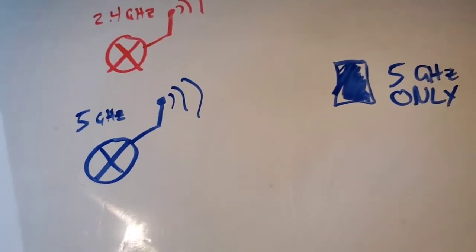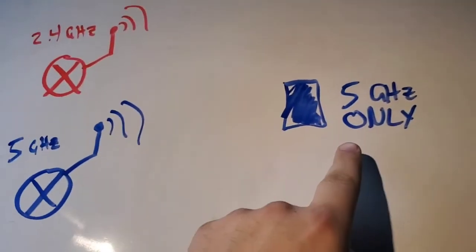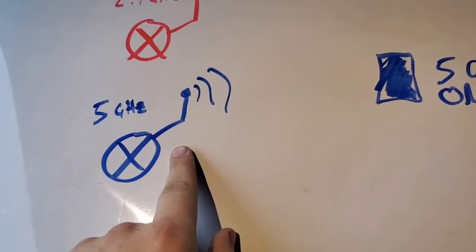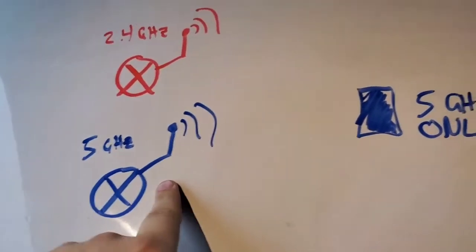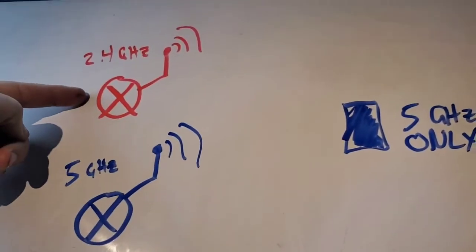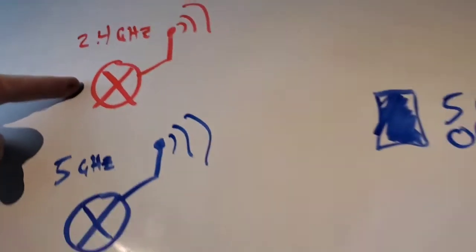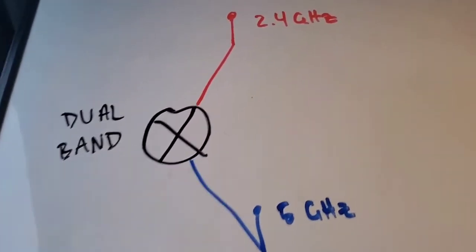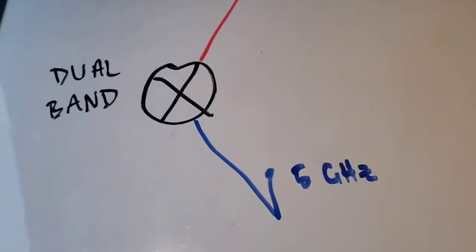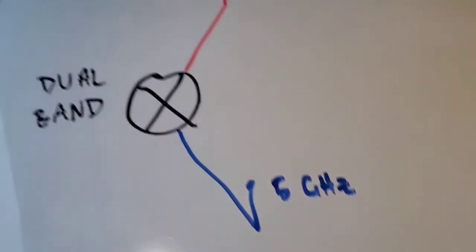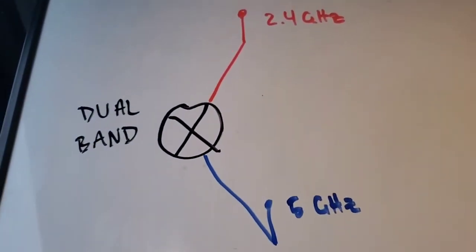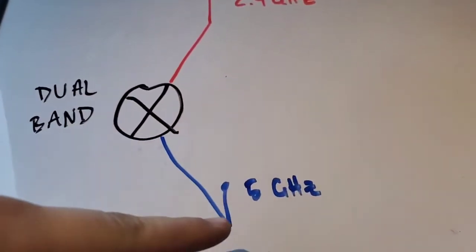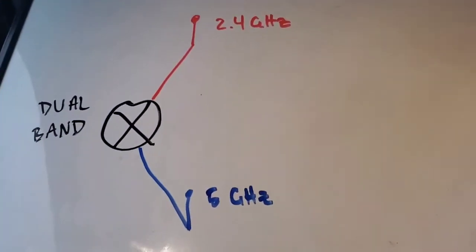In a setup with two routers, a 5 gigahertz-only phone will only be able to receive signals from the 5 gigahertz router — it will not hear or receive any signals from the 2.4 gigahertz network. Some routers support both bands; these are called dual-band routers because they have both 2.4 gigahertz and 5 gigahertz capabilities.